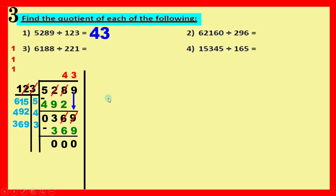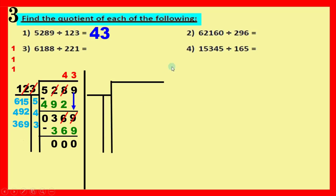Question number two: sixty-two thousand one hundred and sixty divided by two hundred and ninety-six. Set up the steps — the inverted L, the shelf, and the margin. Write the dividend under the ladder and the divisor on the shelf. Dividing by a three-digit number, we take three digits. Our number is six hundred and twenty-one — bigger than two hundred.